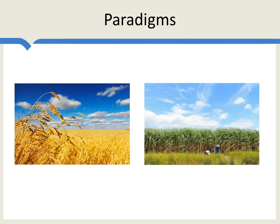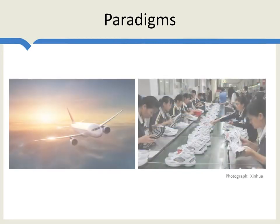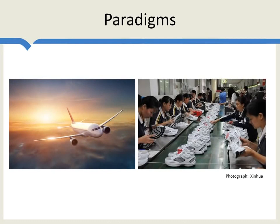Here's a classic example of what we typically think about when we think about trade based upon comparative advantage: wheat and cane sugar. One country has the comparative advantage in wheat, so it exports wheat and imports cane sugar. The other country produces and exports cane sugar and imports wheat. Another classic example comes from Heckscher-Ohlin theory: jet aircraft versus shoes — a high-skill, high-capital intensive good versus a low-skill, low-capital intensive good. One country exports jets and imports shoes; the other exports shoes and imports jets.